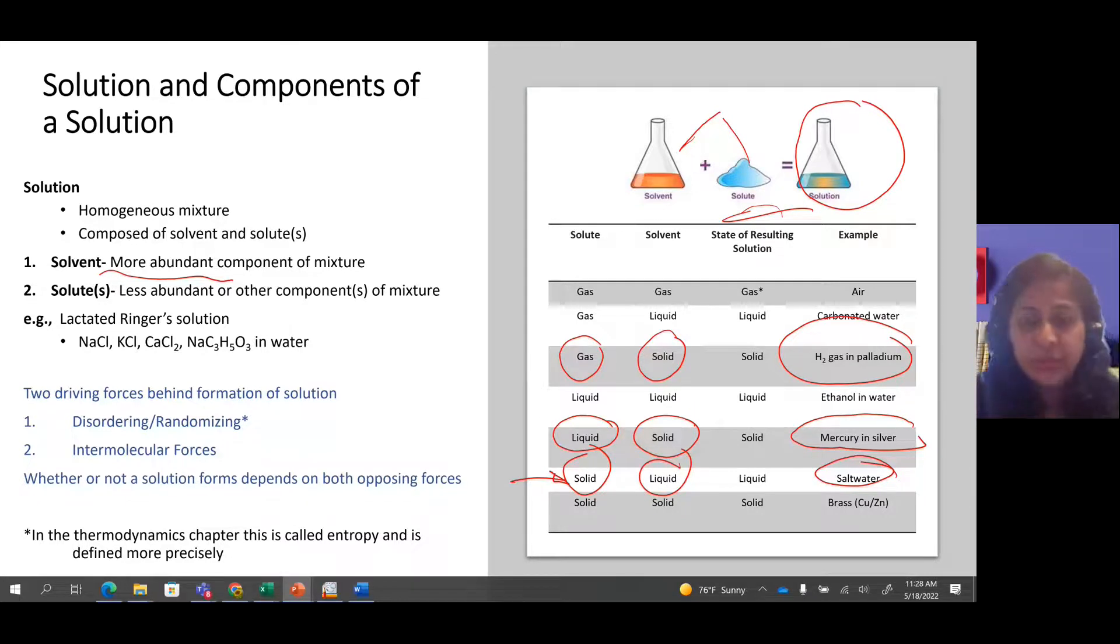How is a solution going to be made? There are two driving forces behind the process of making a solution: the disordering or randomizing. In thermodynamics, we call this factor entropy. We'll talk about entropy later. And the other one is the intermolecular forces. Intermolecular forces play an important role in the process of making a solution.